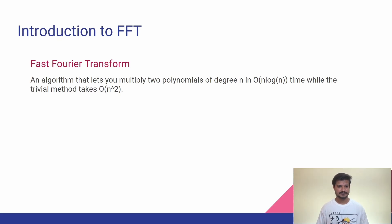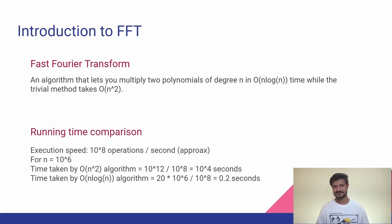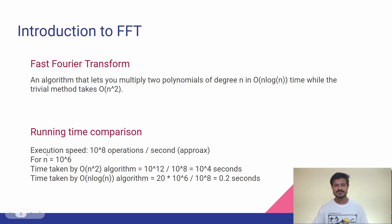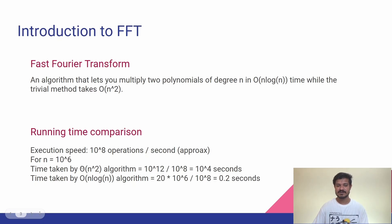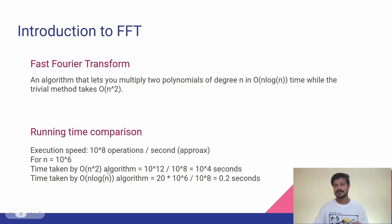To give you a perspective of how much difference there is between n² and n log n, let's take an example. Assume the execution speed of online judges — whether Codeforces, CodeChef, or whatever you're using — is roughly 10⁸ operations per second. If n equals 10⁶, the n² algorithm will perform 10⁶ raised to the power 2, which is 10¹² operations. The time taken would be 10¹² divided by 10⁸, which is 10⁴ seconds. So a polynomial of degree 10⁶ would take roughly 10,000 seconds to multiply using the trivial algorithm.